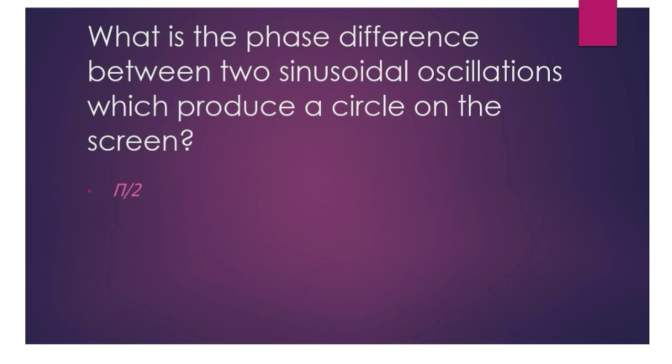What phase difference should be between two sinusoidal oscillations so that they produce a circle on the screen? Answer is pi by two.